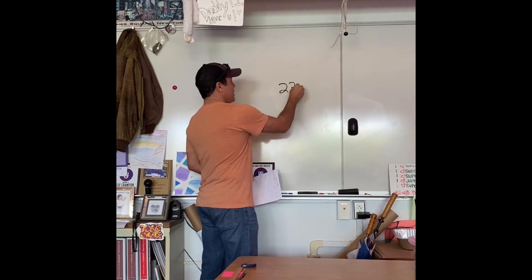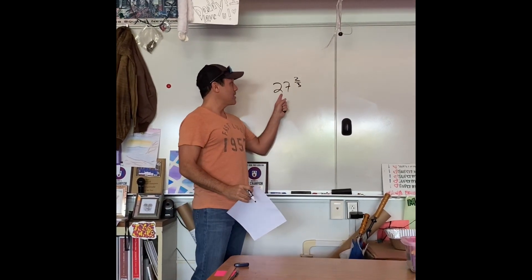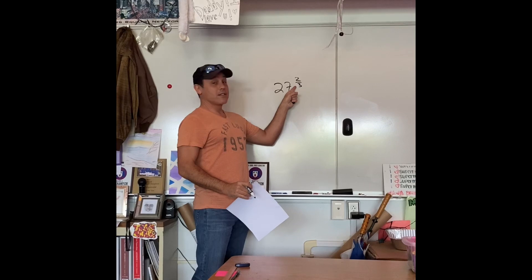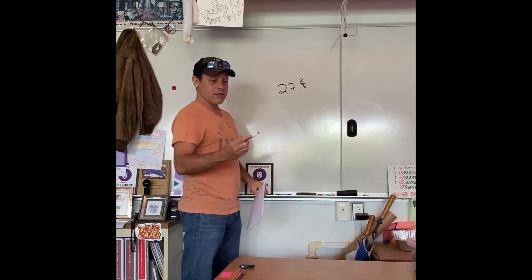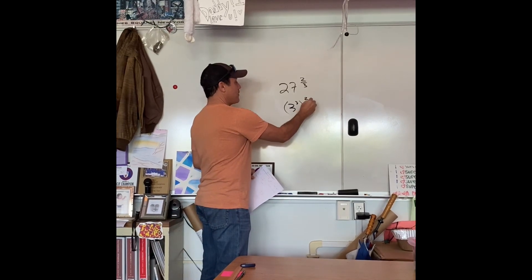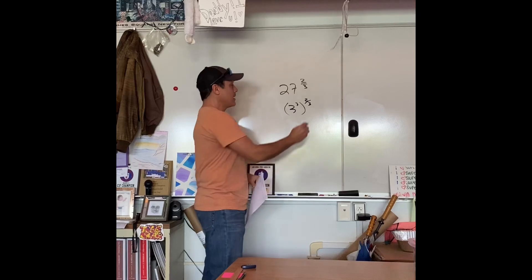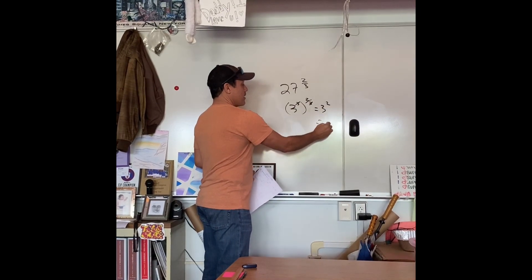All right, you don't believe it? Let's try another one. 27 to the 2 thirds. Again, remember, I want to rewrite 27, and I want to have it raised to the 3rd power, so the 3's canceled. Well, what number times itself times itself gives you 27? You guessed it. 3 to the 3rd is 27. We raise that bad boy to the 2 thirds. Those cancel. We have 3 squared, which we all know is 9.